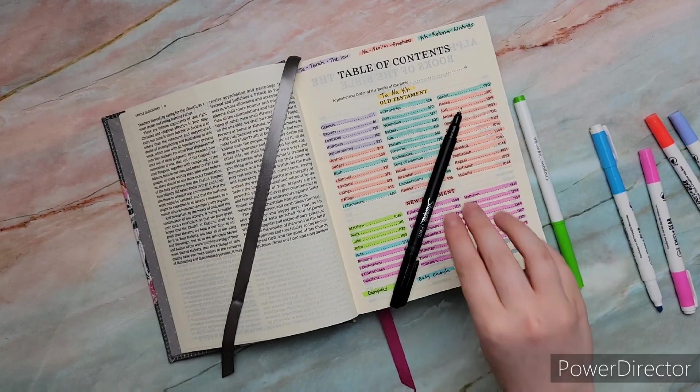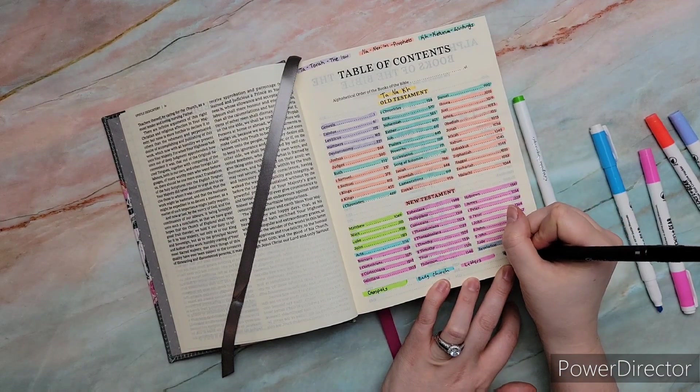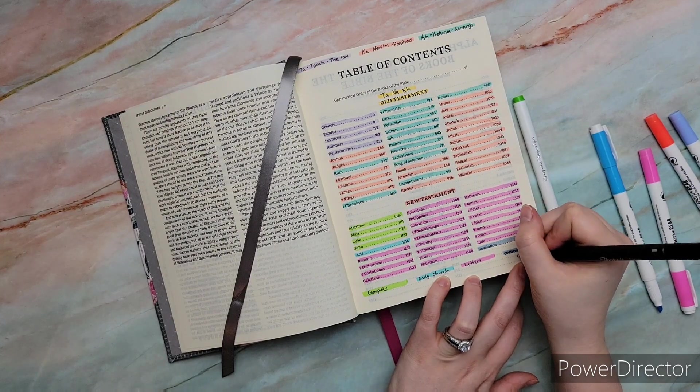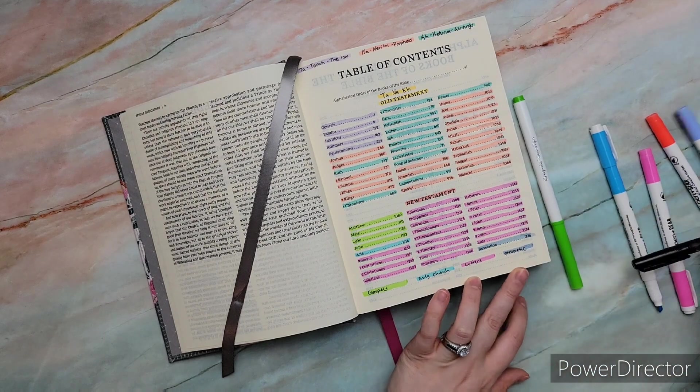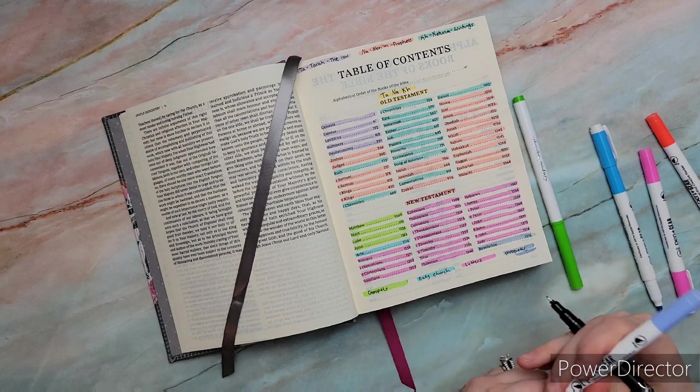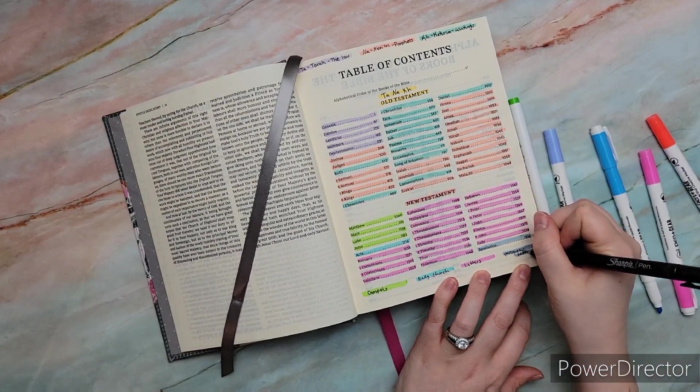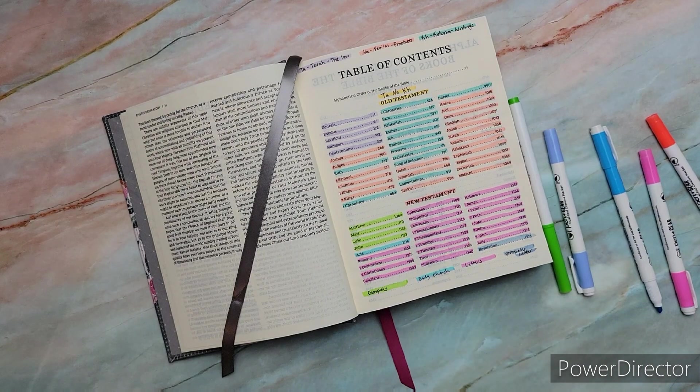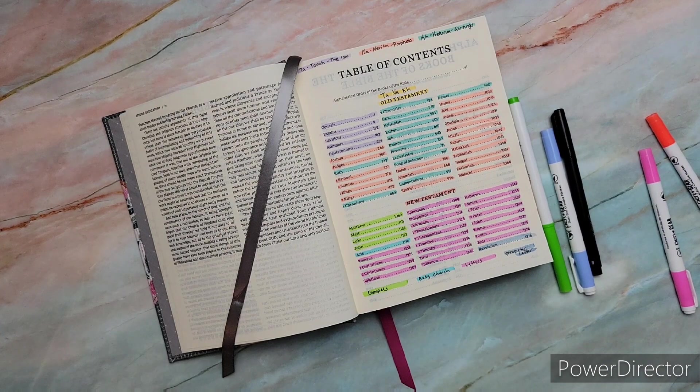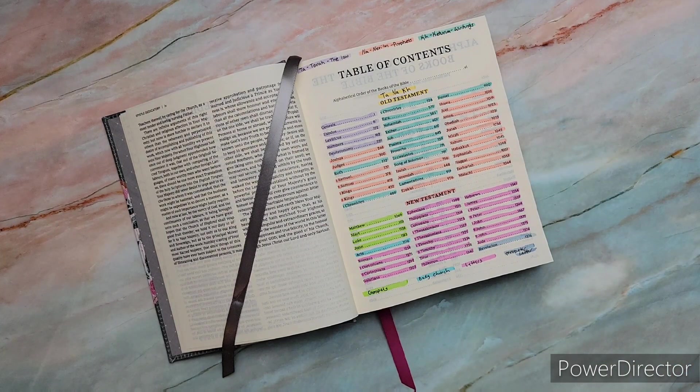However, we now know with more historical findings and things like that, why some of the books were rejected and why some were not. But we know that this is the final canon, and the other books could be good to read, but not necessarily authoritative as these books are.